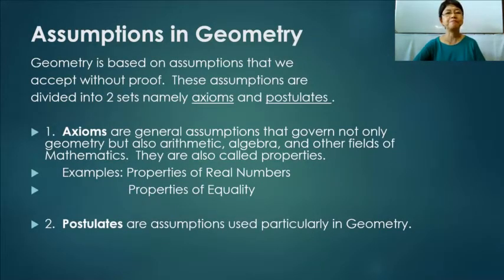Assumptions in geometry. Geometry is based on assumptions that we accept without proof. These assumptions are divided into two sets, namely, axioms and postulates.